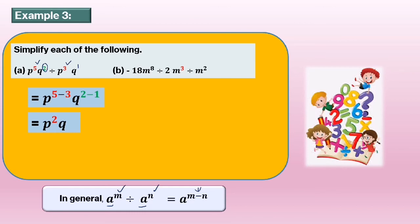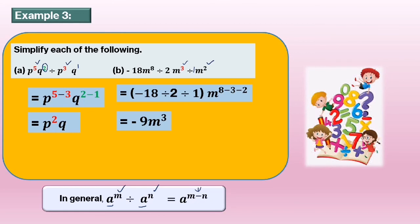Part b: negative 18 m power of 8 divided by 2m power of 3 divided by m power of 2. We gather all the numbers at the front: negative 18 divided by 2 divided by 1. Then m power of 8 minus 3 minus 2, so the answer equals negative 9 m power of 3.